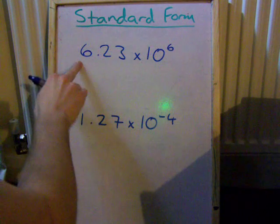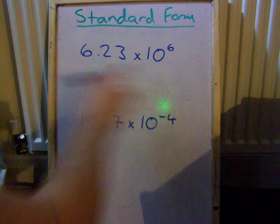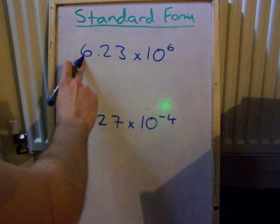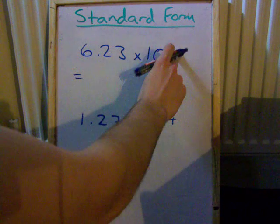Okay, this time what we're going to do is convert a standard form number into its actual number. So in this case we've got 6.23 times 10 to the power 7.